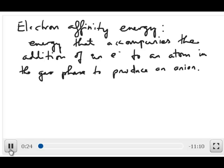Hi everyone, so let's talk about applying trends to electron affinity energy. Electron affinity is the energy that accompanies the following process: the addition of an electron to an atom in the gas phase to produce an anion. You can write generally the equation for electron affinity as the following. You have an atom, and then you add an electron to it, so then what you get is the anion form of the element.